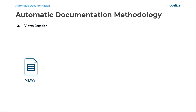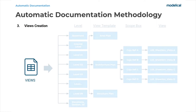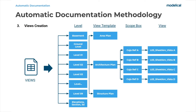From here we start to automate. The third step is to read the views spreadsheet and with one click, through a Dynamo routine, we create all the views automatically. For each level, three views, each one with a view template corresponding to architecture, area and structure. And each one has four dependent views corresponding to each area of the scope box. We also have all the elevations, sections and 3D views — up to 139 views.